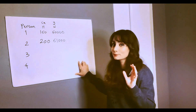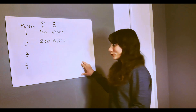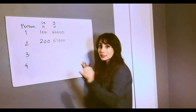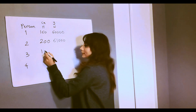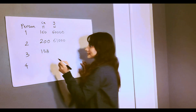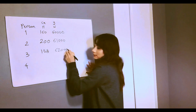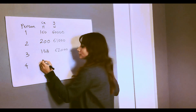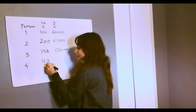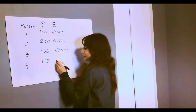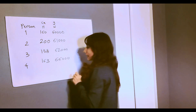If you know centimeters and kilograms, you can totally say that something is off — but keep that in mind. Person three is 158 centimeters and 62,000 grams. And person four is 163 centimeters and 66,000 grams.